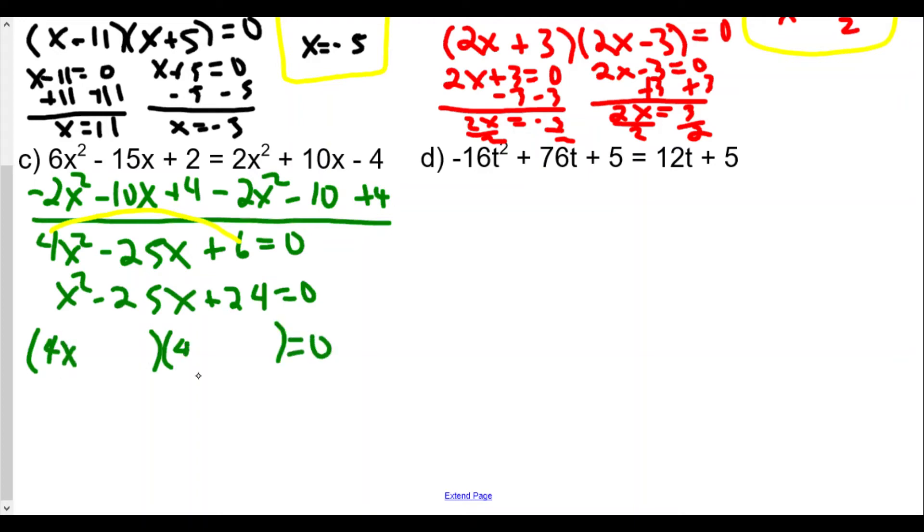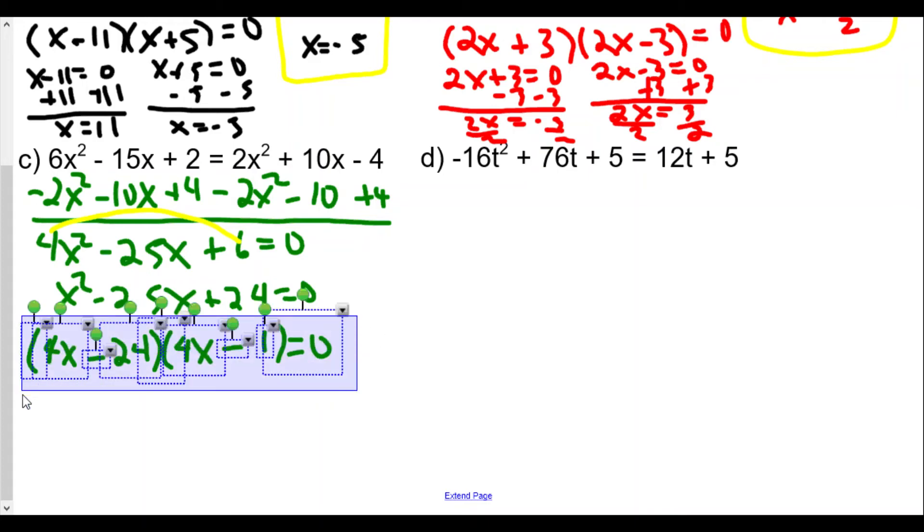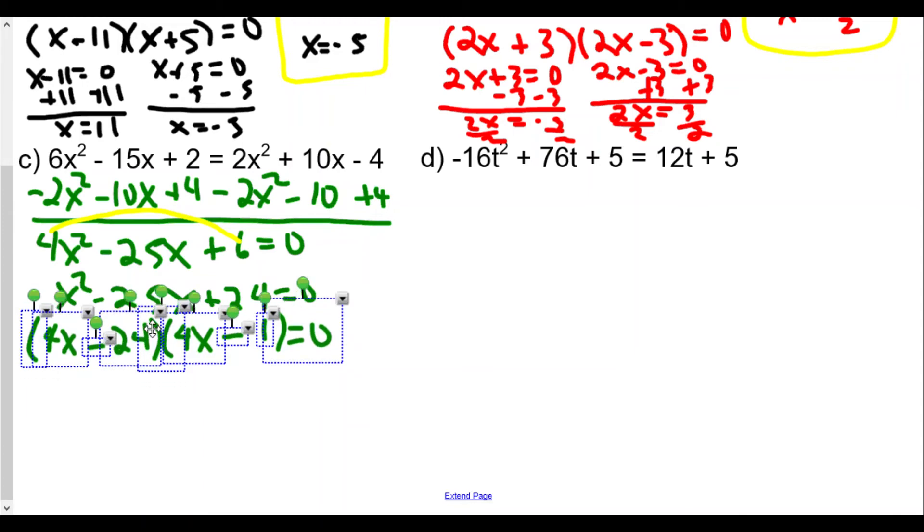You'll see how it works out later. Two numbers that multiply to 24 and add to 25 are definitely going to be 24 and 1. The large number gets the negative, and because we want positive 24, this is negative as well. This next step, I just want to make sure I move this up a little bit higher.